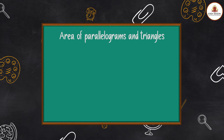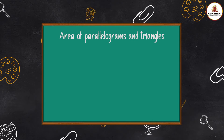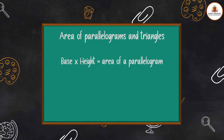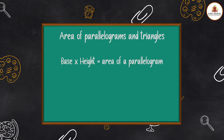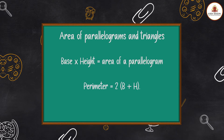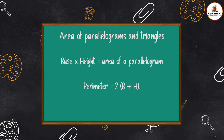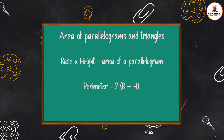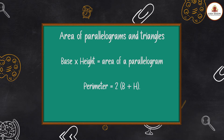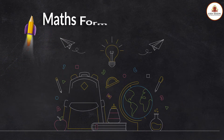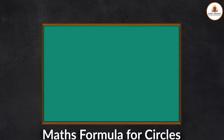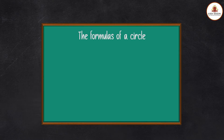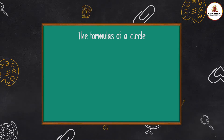Now let's move on to the area of parallelograms. Base times height is the area of a parallelogram, and its perimeter is 2 × (b + h). Now, maths formulas for circles — if you're wondering what the formulas of a circle are, we are coming right there.